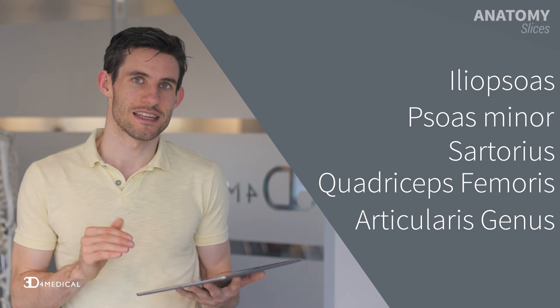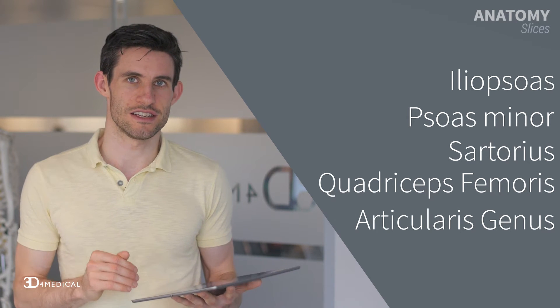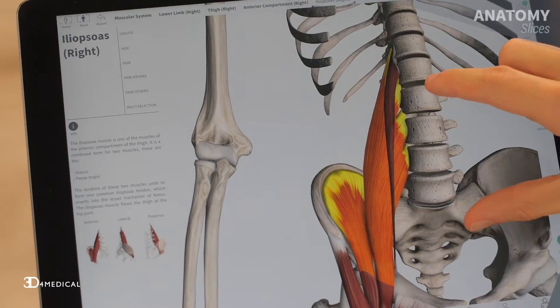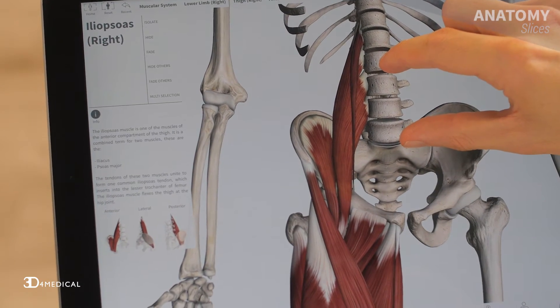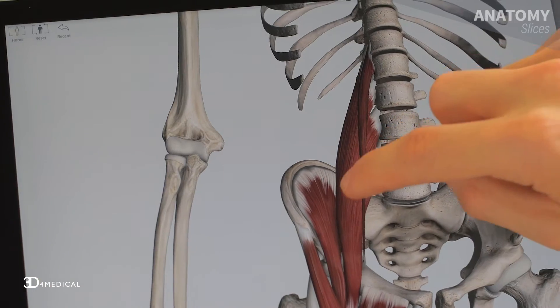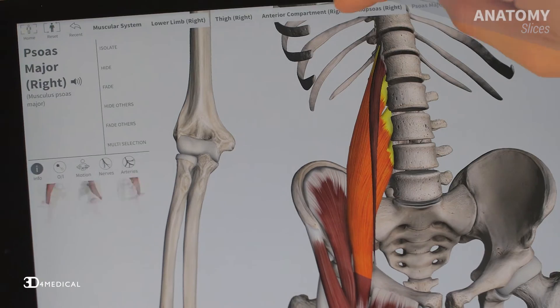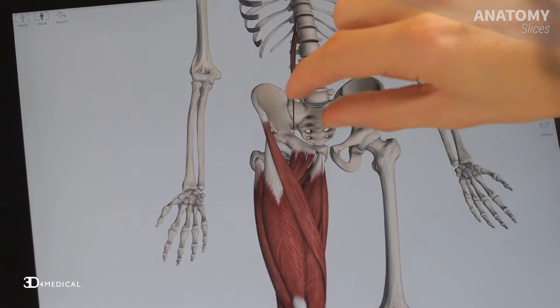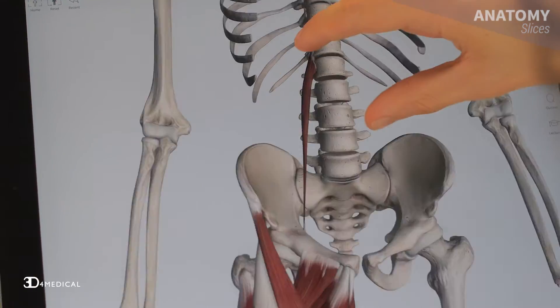So let's take a quick look at each of these individually. The iliopsoas is a combined term for two muscles: the iliacus and the psoas major. The psoas minor is pretty much just a smaller version of the psoas major.